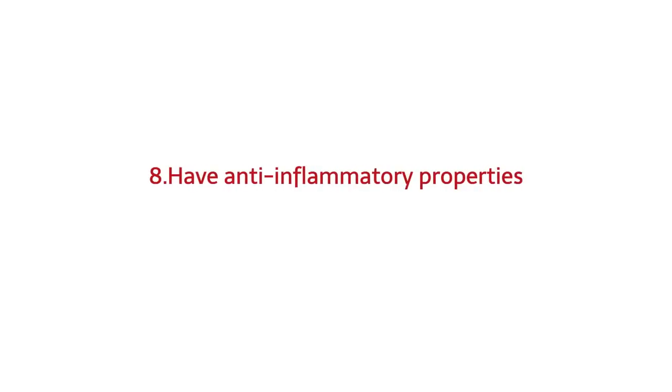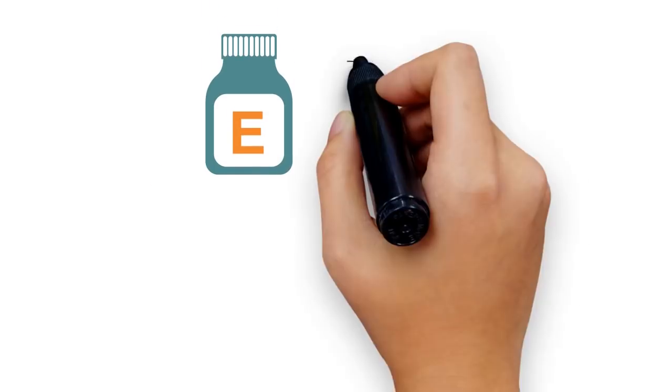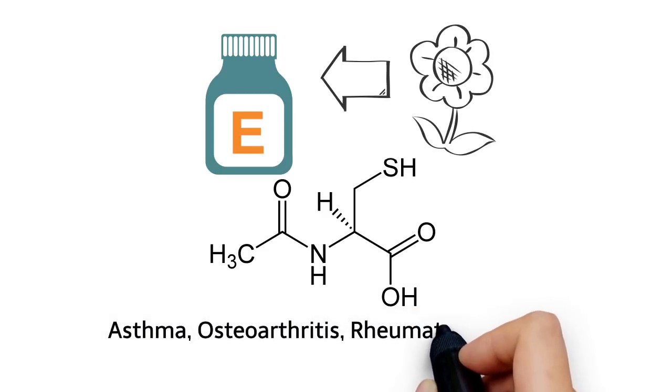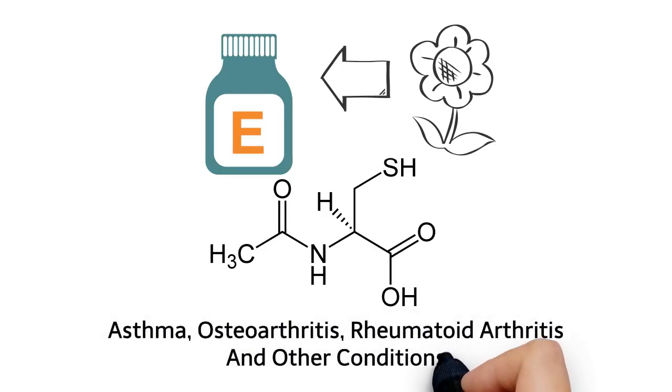Have anti-inflammatory properties. According to the World's Healthiest Foods, the vitamin E found in sunflower seeds proves beneficial for battling anti-inflammatory issues such as asthma, osteoarthritis, rheumatoid arthritis, and other conditions.